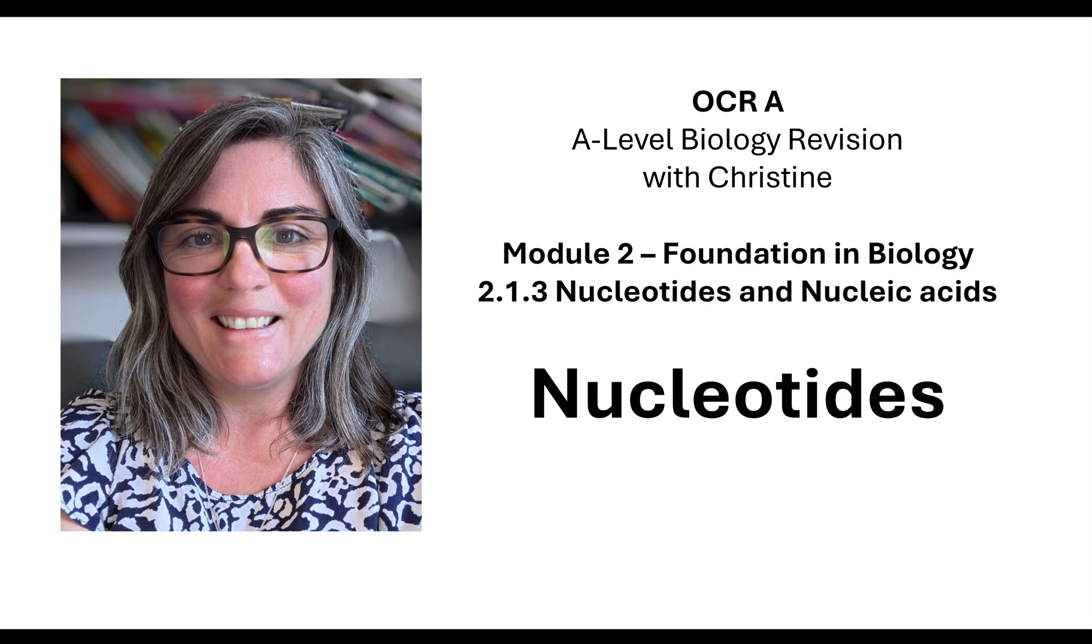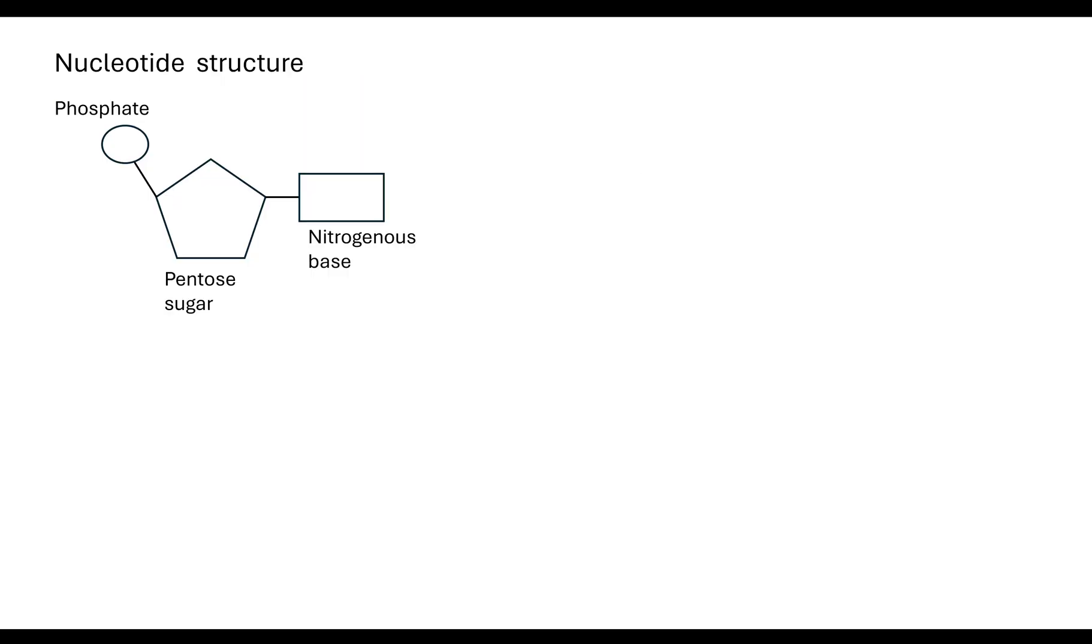Welcome to my OCR A-level biology revision session with me, Christine. In this lesson, I'm going to look at nucleotides, part of module 2.1.3. A nucleotide is made up of three parts: a nitrogenous base, a pentose sugar, and a phosphate group.